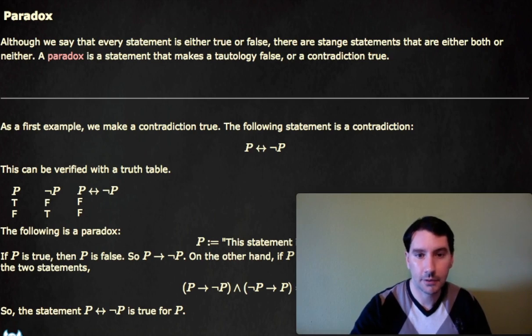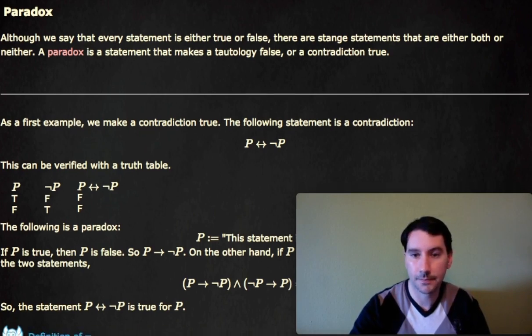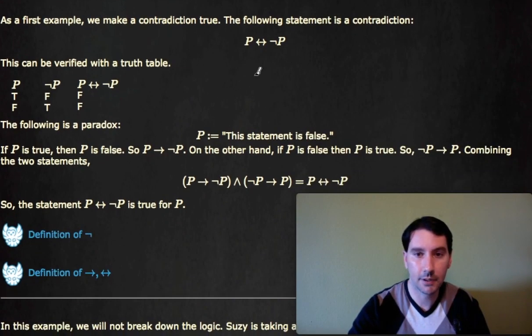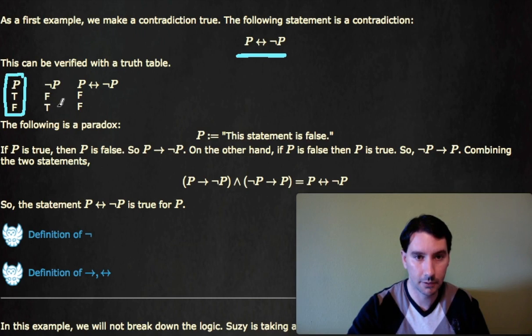As a first example, we're going to make a contradiction true. The contradiction is P if and only if not P. That can't ever happen. If we look at the inputs for P, P could either be true or false, and not P would be false or true. So P being logically equivalent to not P is always false. P can never be not P.